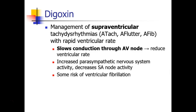First, let's talk about digoxin. Digoxin is a drug commonly used in the management of supraventricular tachydysrhythmias, so things that happen in the atria: atrial tachycardia, atrial flutter, atrial fibrillation, and especially tachyarrhythmias with a rapid ventricular rate.